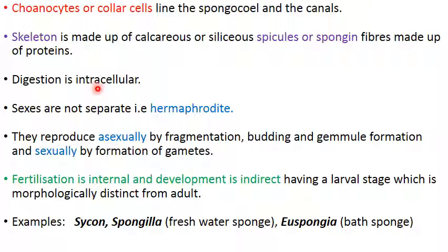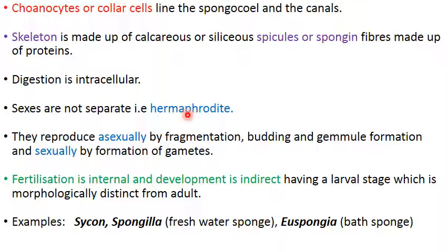Digestion in sponges is intracellular — it occurs within the cells, as opposed to extracellular digestion which takes place outside the cell in the alimentary canal. Sexes are not separate in sponges, so they are called hermaphrodites, bisexual, or monoecious.